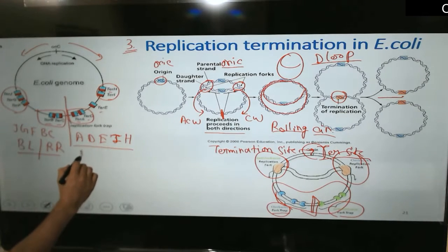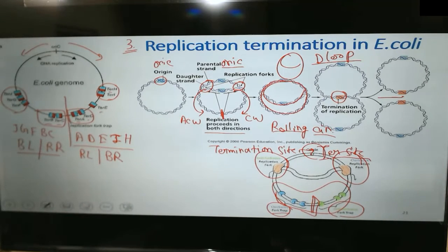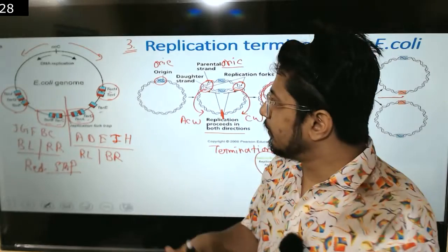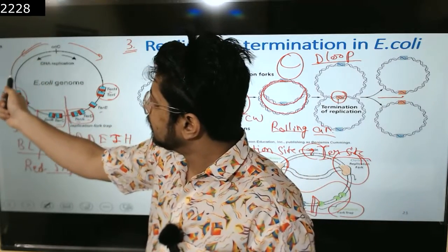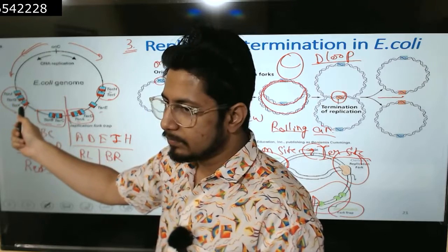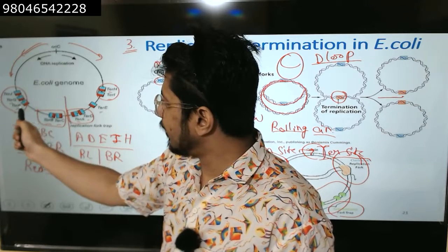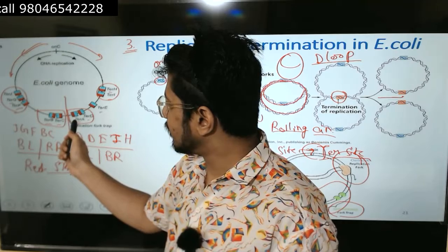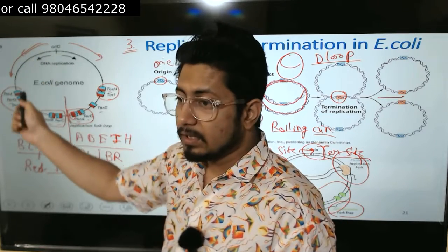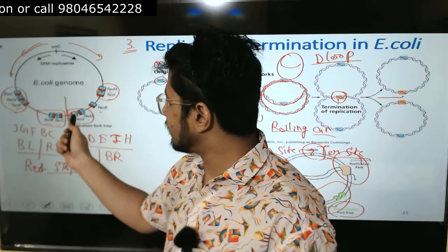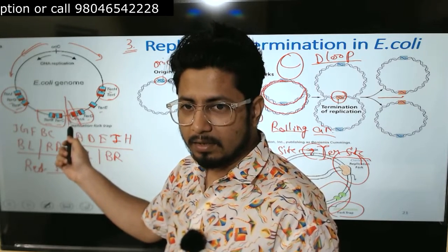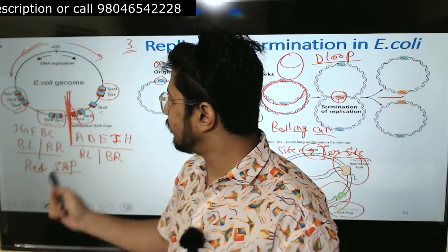They are little different - red means stop. If you look at this, the fork is moving, the fork is encountering blue side only. Blue means on. Ter J - fork will move, ter G - fork move, F move, B move, C move. For the first time, the replication fork which is counterclockwise will face red from ter A. So this fork will stop just before ter A.